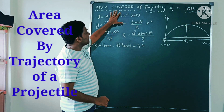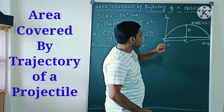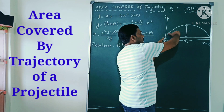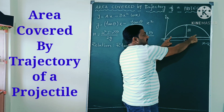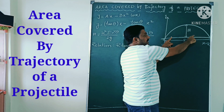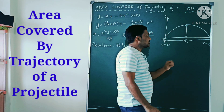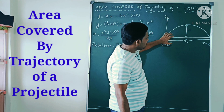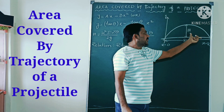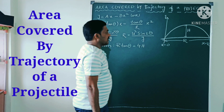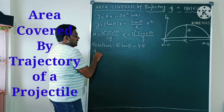In this video especially we have to discuss about the area covered by the trajectory — how much area is covered when the projectile travels both along the x-axis and y-axis in two dimensions. So we have to integrate with respect to x along the y-axis.